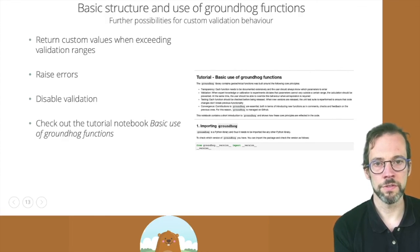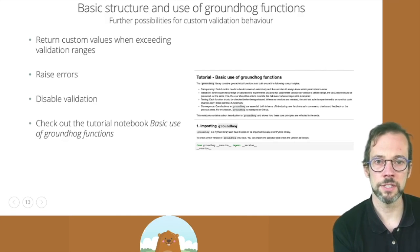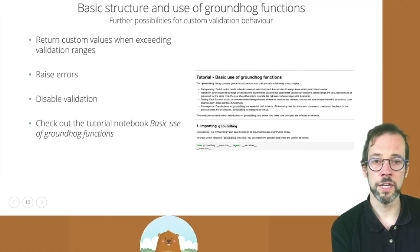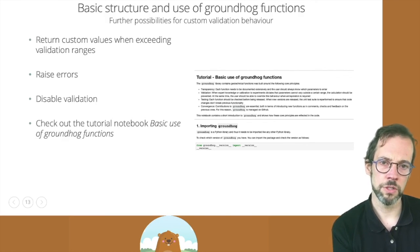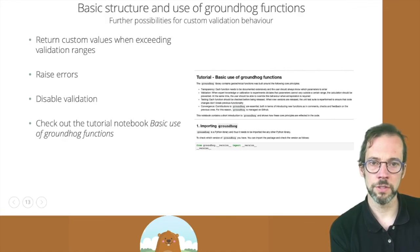You can return another value in case you exceed the validation ranges. Sometimes it's easy to return zero if you exceed validation ranges rather than none. You can also choose to raise an error anyhow, but you're going to need to specify that because Groundhog functions fail silently, as we say by default, or you can disable validation altogether, but I wouldn't recommend doing that.